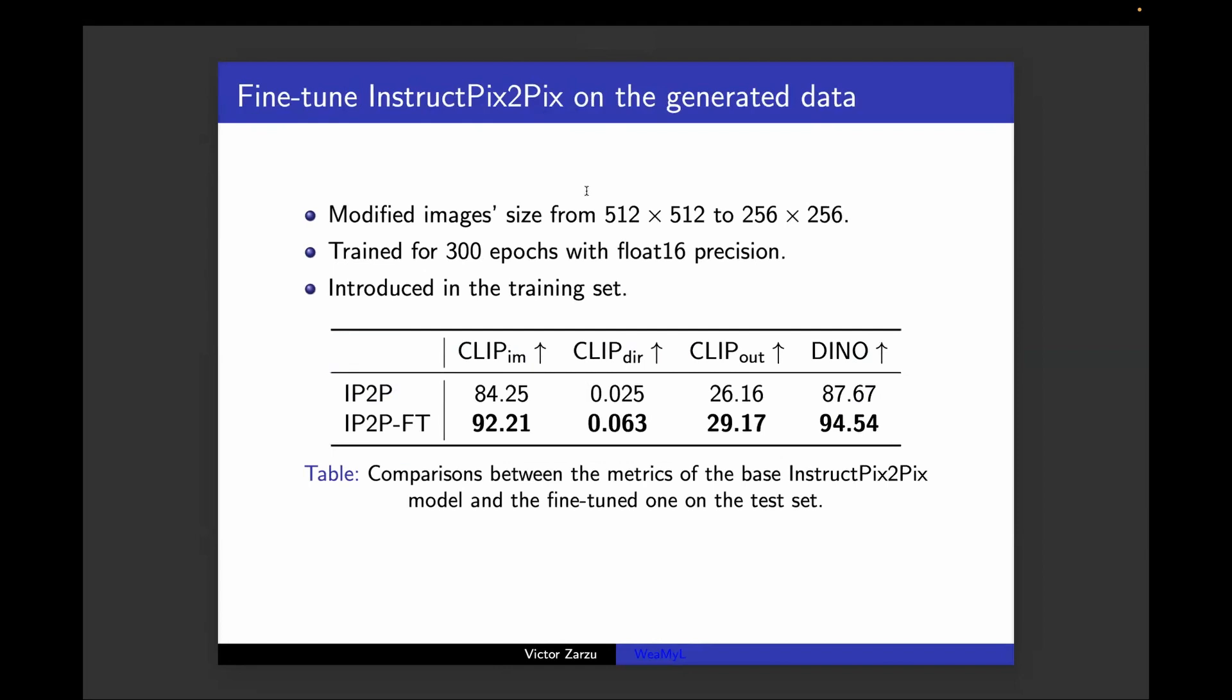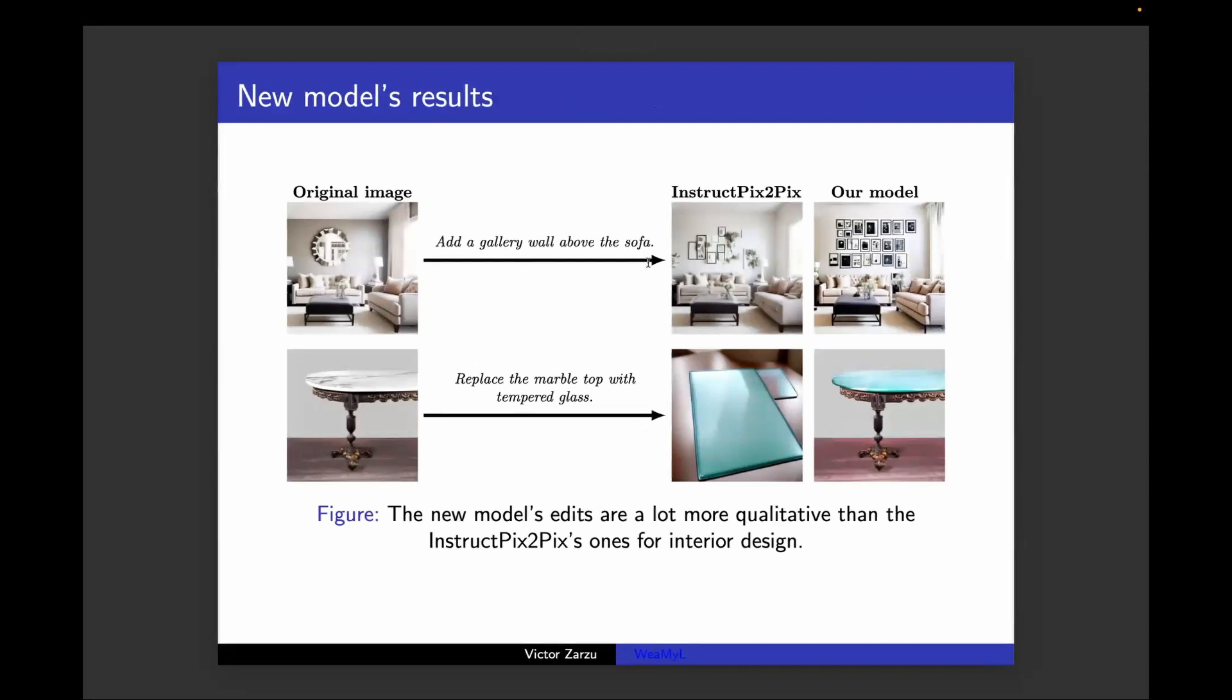On the initial generated data, we fine-tuned InstructPix2Pix, but reduced the image size to half. We also trained in float16 precision due to limited resources. We see that based on different metrics, the fine-tuned InstructPix2Pix is better than the original one, where CLIP-IM means the similarity between the initial and output image. Direction means the similarity between the changes in the text and changes in the images. And CLIP-OUT is the similarity between the output caption and the edited image by the model. It can be seen our model learns to edit the images better than vanilla InstructPix2Pix.